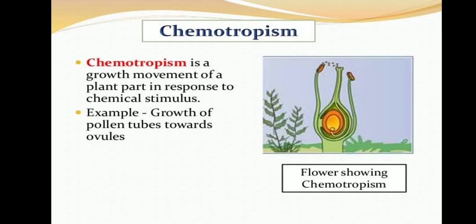Next, chemotropism. It is a kind of growth movement of a plant part in response to a chemical stimulus. The pollens are carried to the flower with the help of insects or by wind, and this pollen moves inwards towards the ovule. The ovule turns into a fruit — for that purpose the movement of pollen takes place inwards inside the flower towards the ovule. This is a kind of chemotropism, and it is a good example of it.